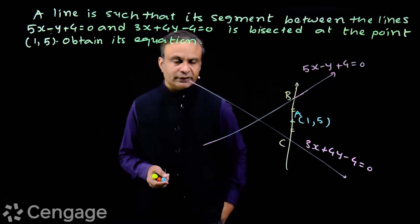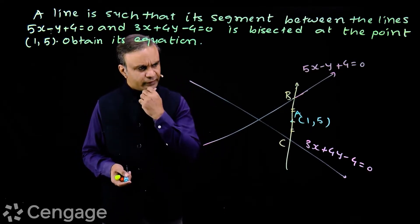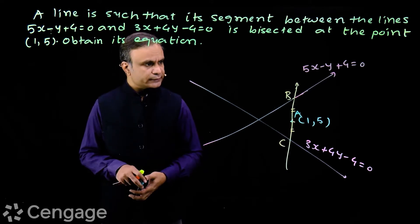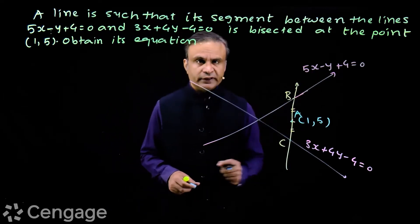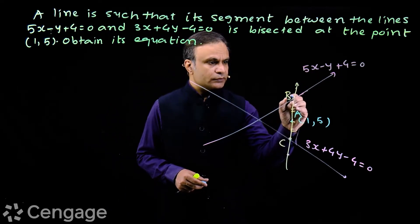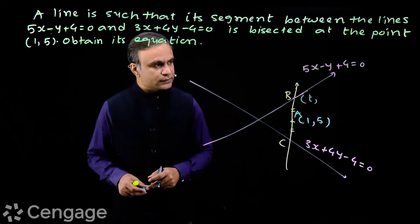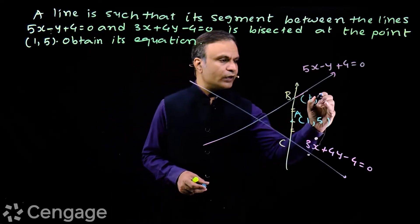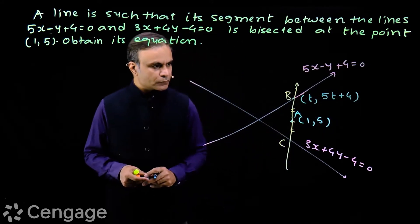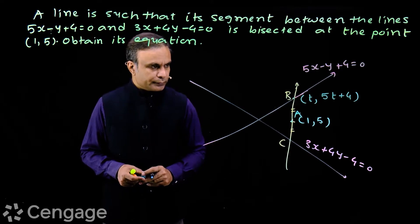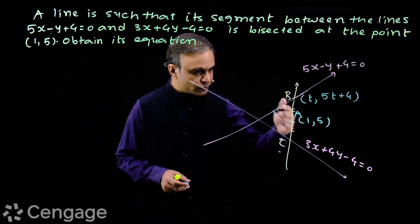Now, how should we proceed? I think we can find the coordinates of points B and C. Point B lies on the straight line 5x minus y plus 4 equal to 0. Suppose the x-coordinate of point B is t. Then the value of y will be 5t plus 4. Now, if we can find the value of t, we can find the equation of the line.